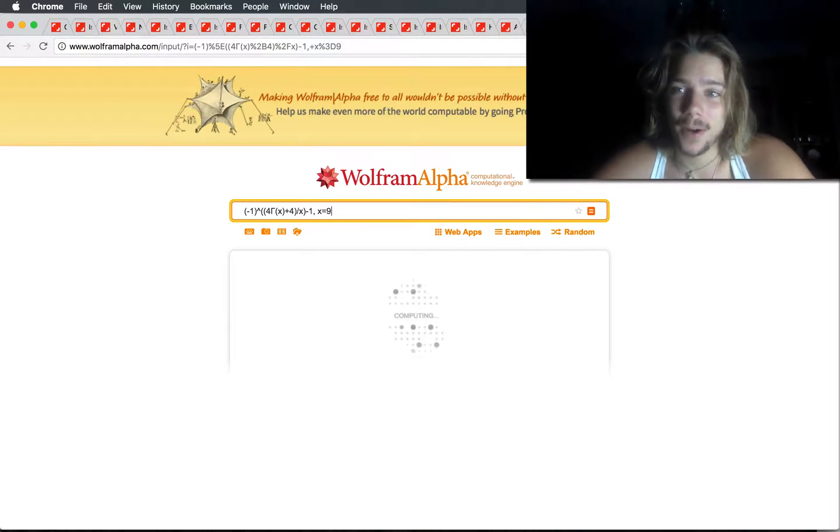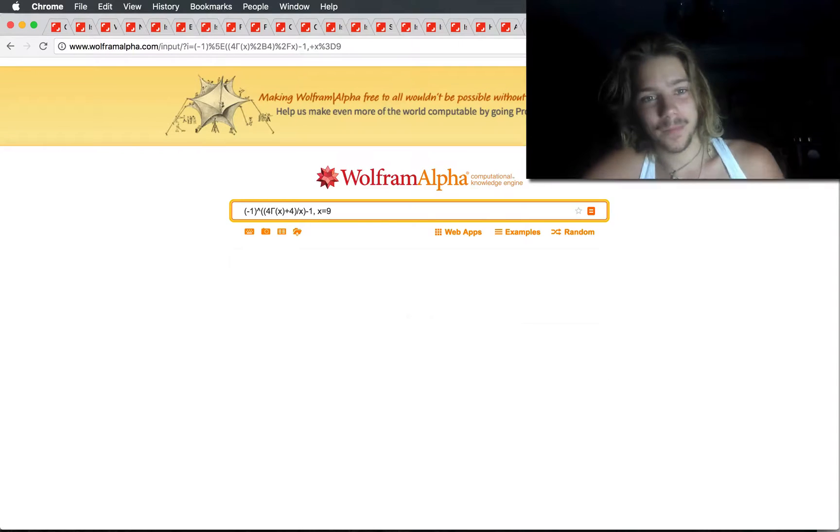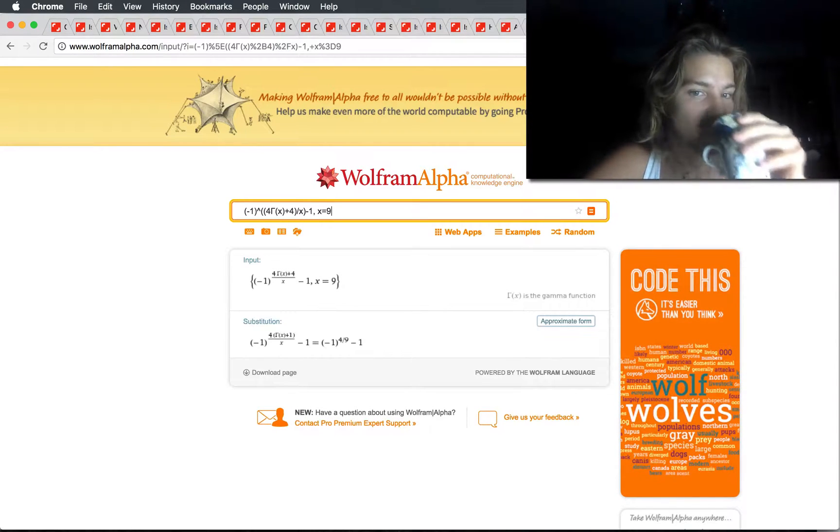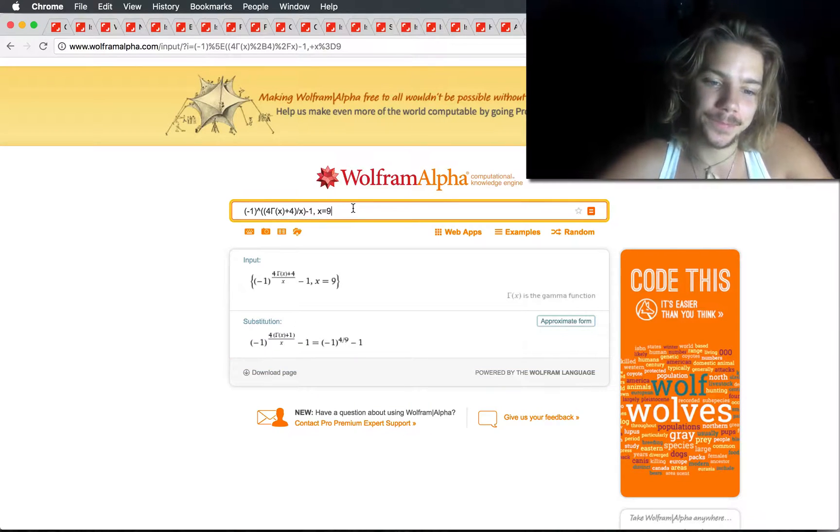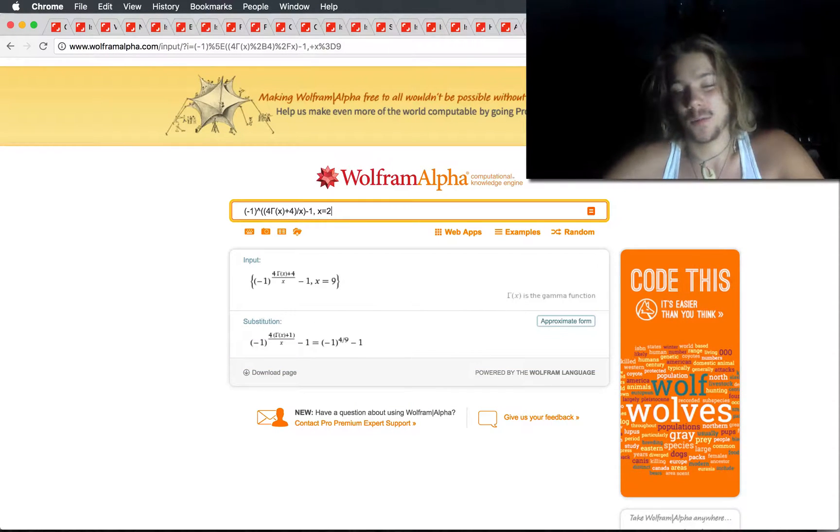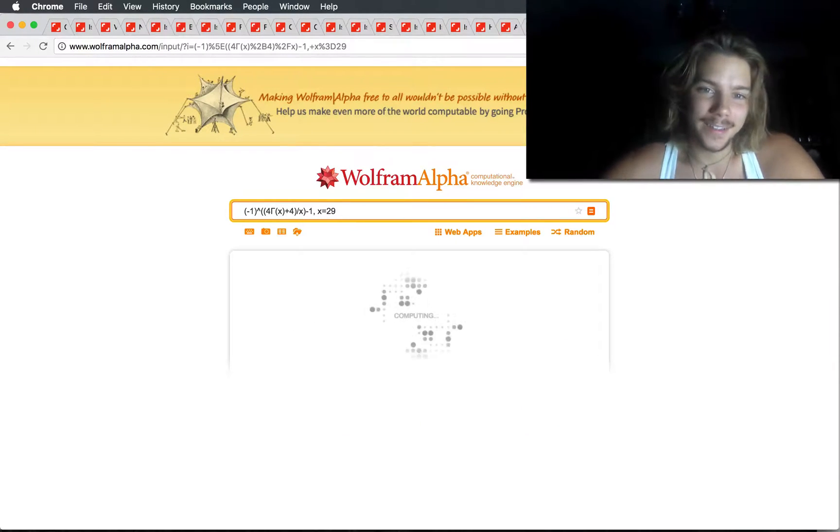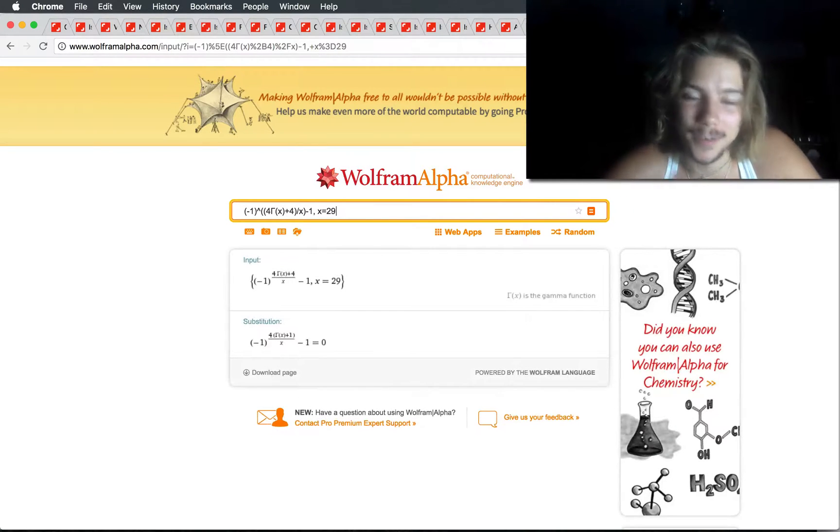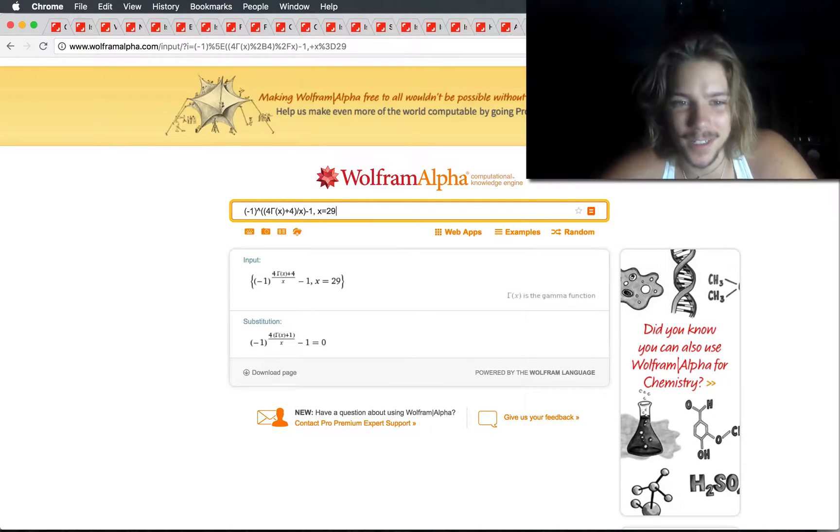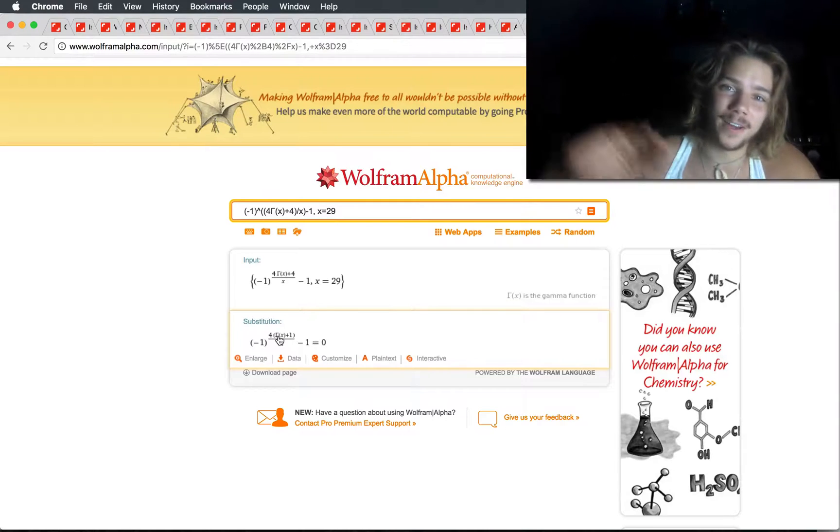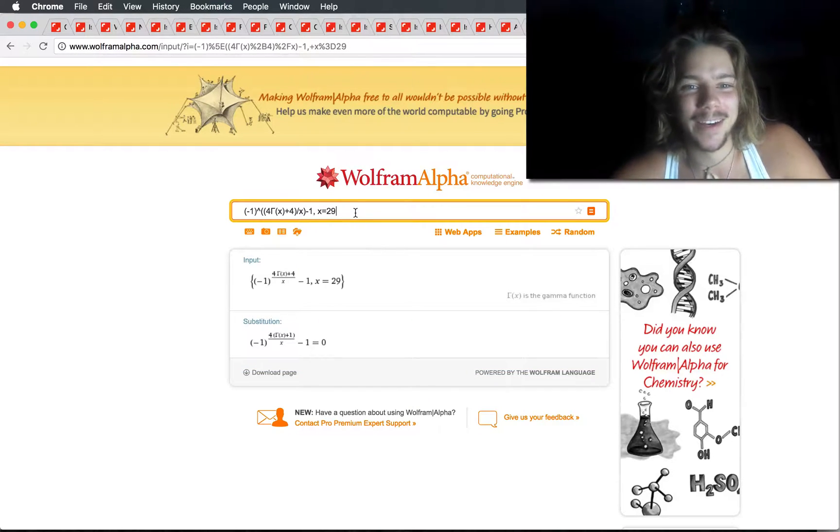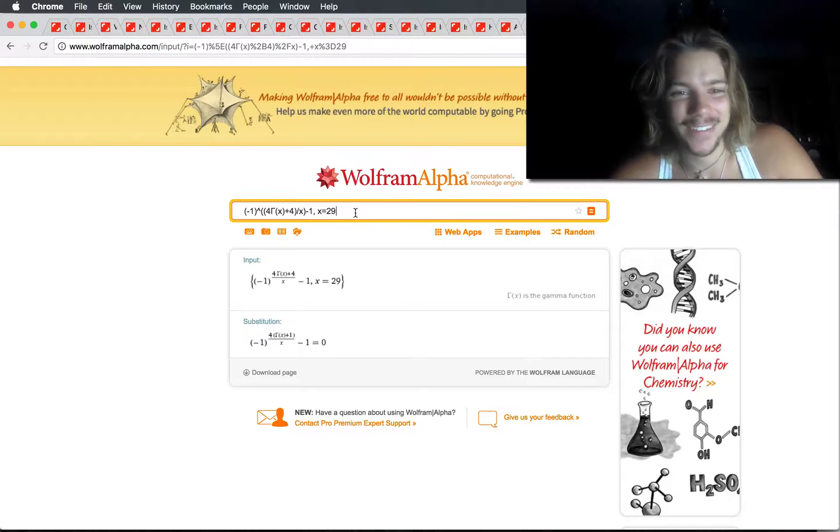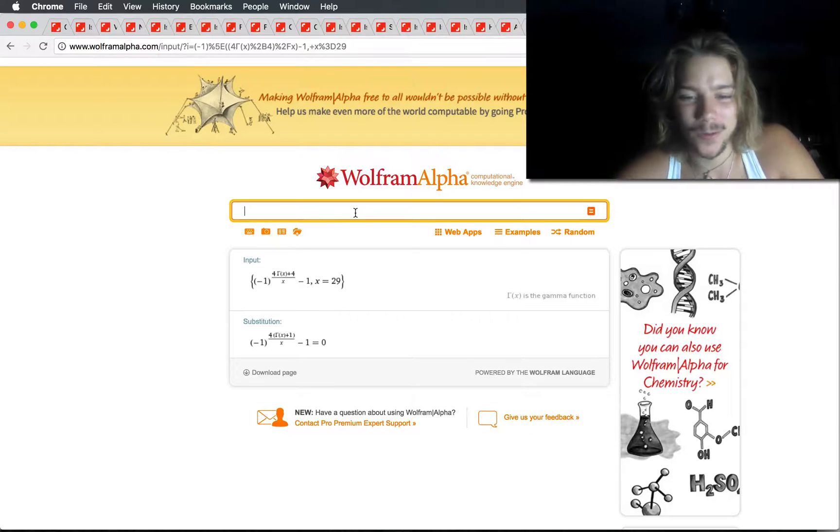7 is prime, we'll plug that in. We should get 0. And yes, negative 1 to the 4 gamma 7 plus 1 over 7 minus 1 is 0. A number like 9, which is not prime, should not give us 0. And it does not, it gives us this. Bigger numbers, we'll say like 29 is prime. This should return 0 for that as well. Keep in mind, we are dealing with gamma function, which gets very big very fast. So we are going to start suffering from rounding issues down the road, obviously.